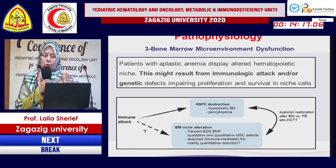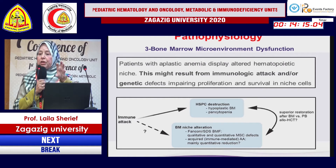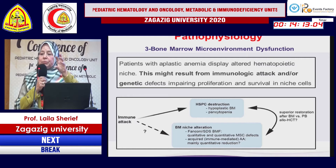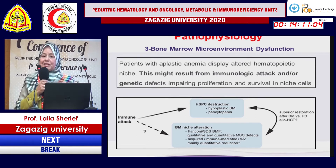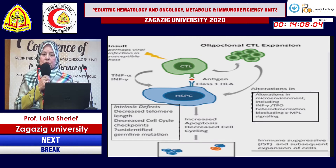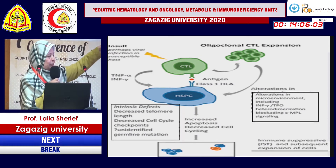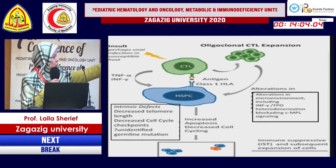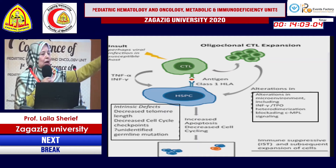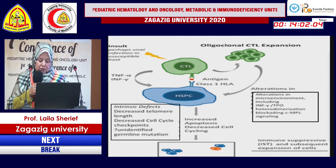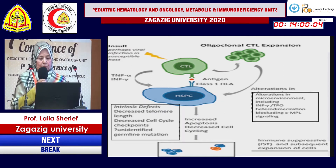Abnormalities of the bone marrow microenvironment, which can be triggered by immune dysregulation or genetic factors, are also important since the microenvironment is critical for maintenance of hematopoietic stem cells. Collectively, these abnormal immune responses, hematopoietic stem cell abnormalities, and microenvironment abnormalities underlie aplastic anemia.